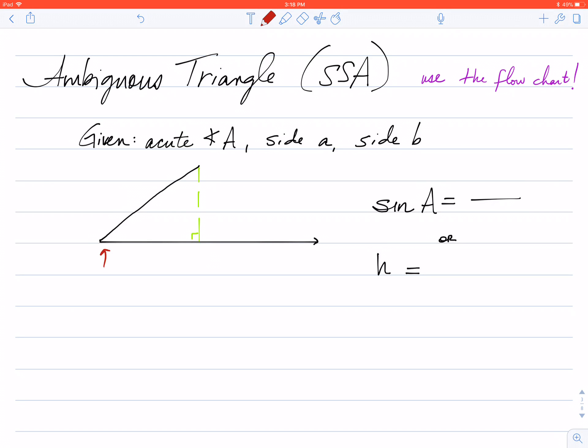So this is the one angle that I am given. Now let's put some letters to this. You'll notice that in this particular example, I have given you the acute angle A and I've given you side a. Now notice those two have the same name. I'm going to refer to that later on. And then the third thing I've given you is side b.